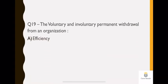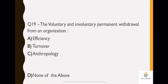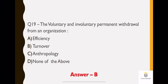Question 19: the voluntary and involuntary permanent withdrawal from an organization is known as what? We just studied in the last question about anthropology. Anthropology has nothing to do with voluntary and involuntary permanent withdrawal from an organization. It is only concerned with the human race. Now two options remain: option A efficiency and option B turnover. Efficiency means doing some work very efficiently. Here the question asks about voluntary and involuntary permanent withdrawal. So the answer will automatically become option B, which is turnover.